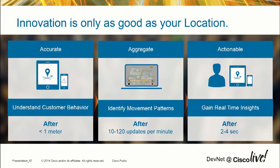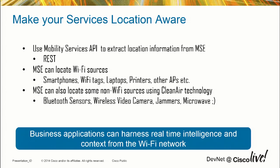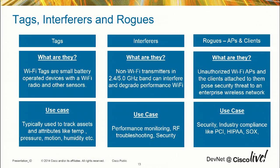Now that we've got this information, how do we access it programmatically? We've got two ways. One is the REST API — the way to do it from the server side. We have capabilities to get information about clients, as well as Bluetooth sensors, wireless video, anything interfering. All this information can be gained through REST APIs. Tags are basically devices out there; interferers are out there as well; and rogue APs and clients are also categorized — we have REST APIs to pull information from all of these.